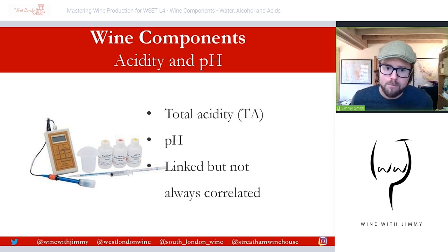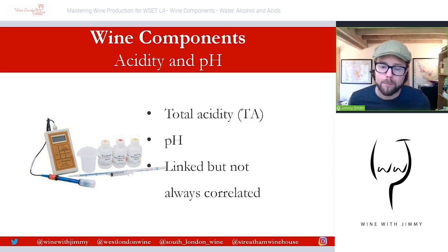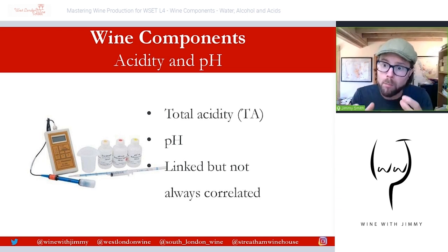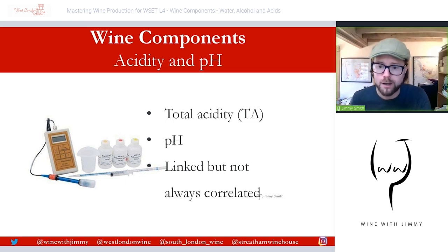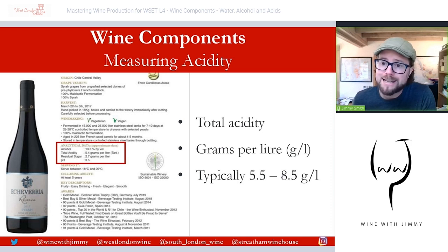Usually high acidity corresponds to a low pH, but pH is also important when thinking about sulfur dioxide. The amount of molecular SO2 present is very much affected by pH: at pH 3.0 there is around 6% SO2 in molecular form, at 3.5 it's around 2%, and at pH 4.0 it's only around 0.6%. This is where we start talking about the difficulty of protecting wine at higher pH levels, where microbiological and bacterial spoilage become more problematic.